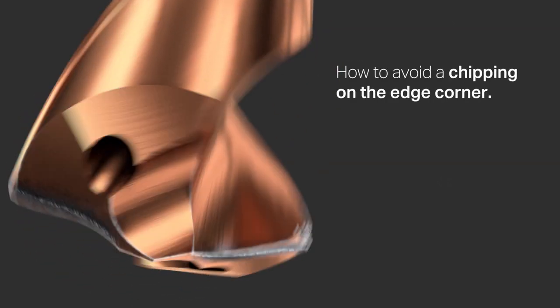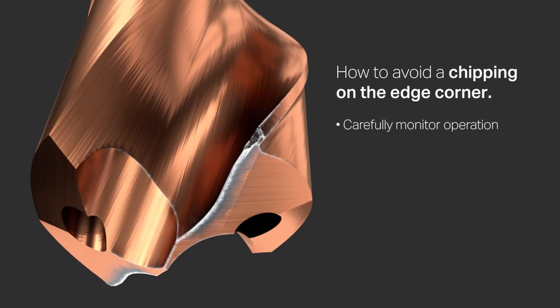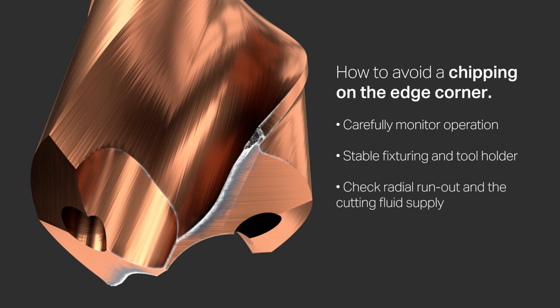Chipping on the edge corner can be prevented by carefully monitoring your operation. Check to make sure the fixturing and tool holder are stable. Check radial run-out and the cutting fluid supply. You may also need to decrease the feed rate.